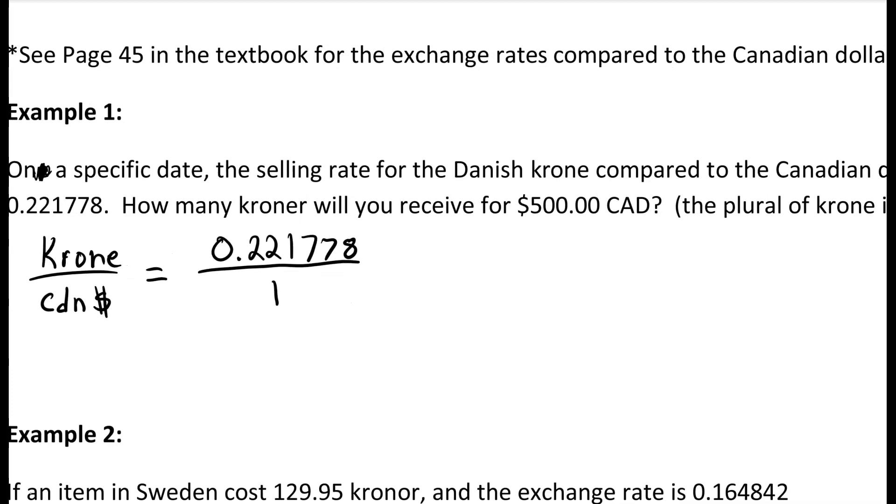The thing we want to figure out is how much will we get for 500 Canadian. Remember Canadian is on the bottom. I suggest always setting this up first so you can keep track of which is going where. So we have 500 Canadian dollars and we're trying to figure out how much we're going to get in exchange.